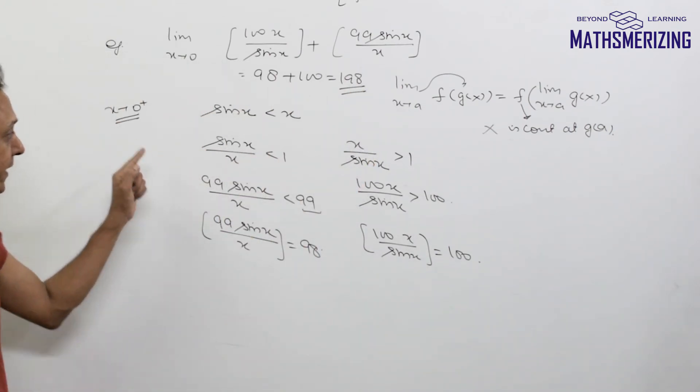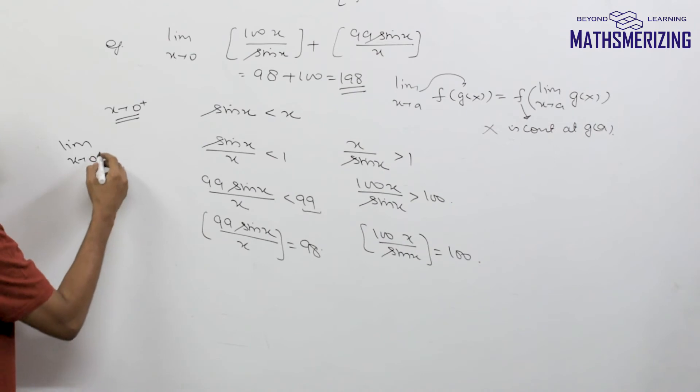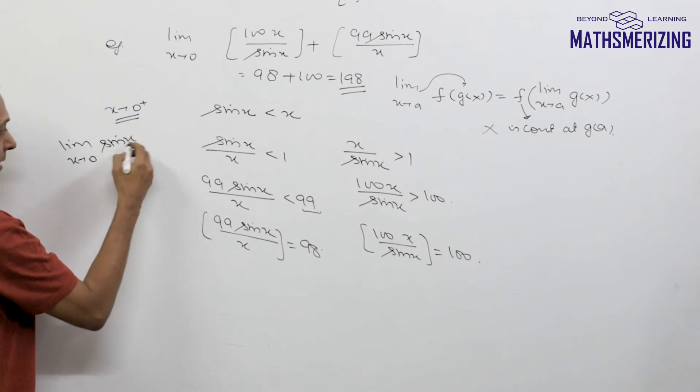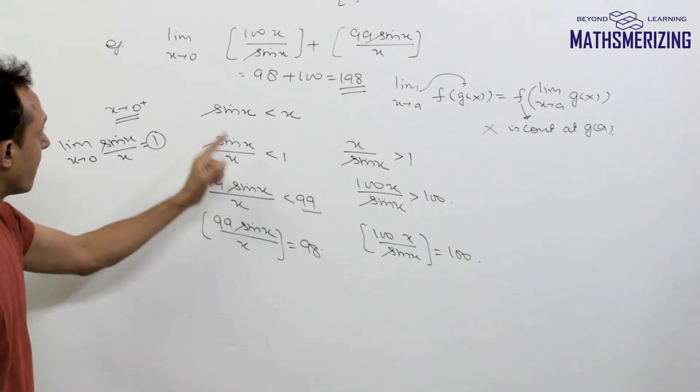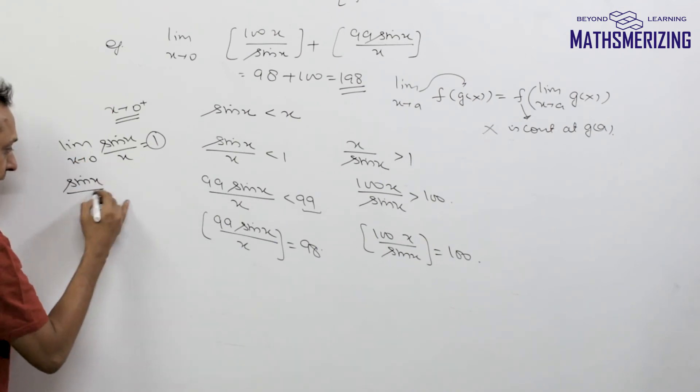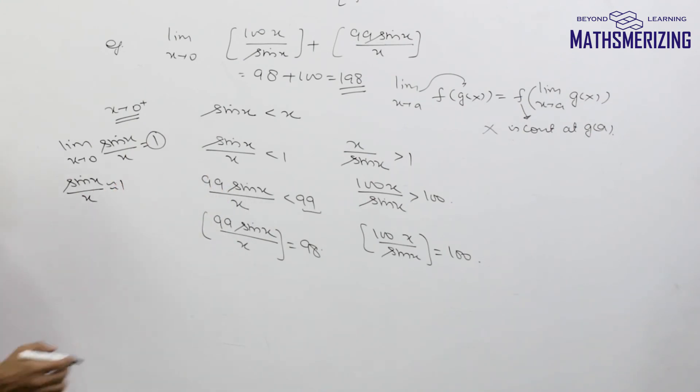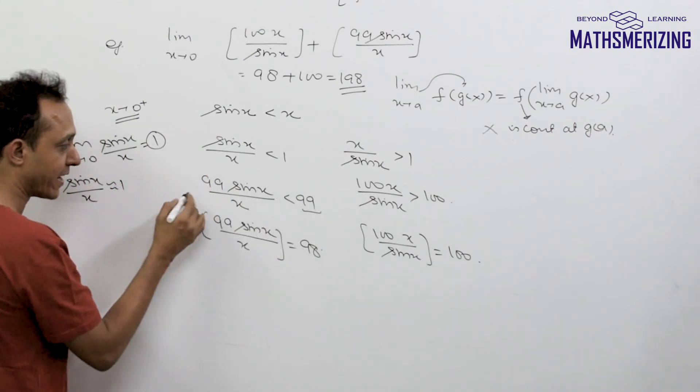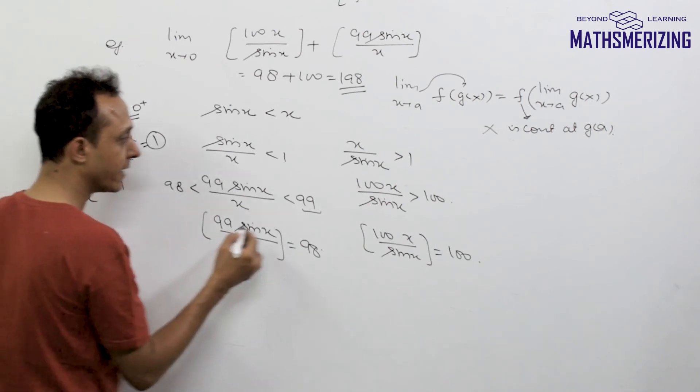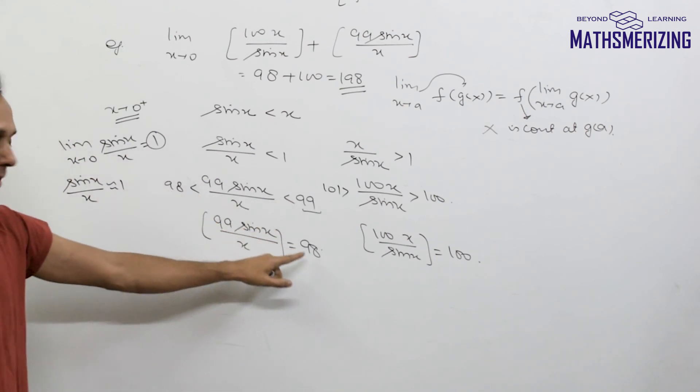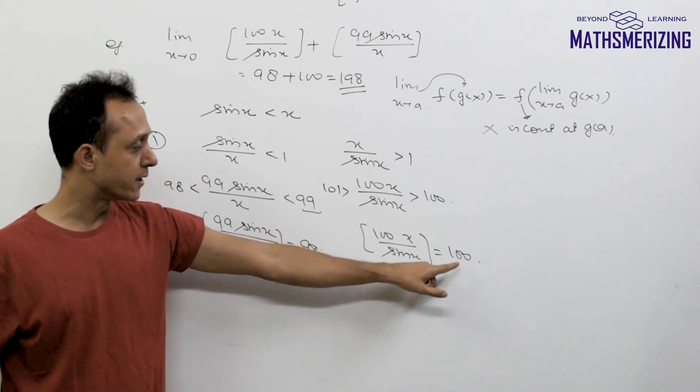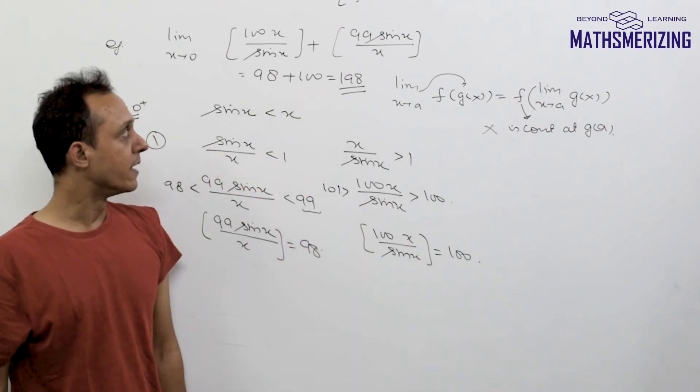One thing to note: when x tends to 0, sin(x)/x is not exactly 1 but nearly 1—just less than 1. So 99sin(x)/x will be greater than 98, which means the greatest integer function gives 98. Similarly, 100x/sin(x) will be less than 101, so the greatest integer function gives 100. That is how we get the answer 198.